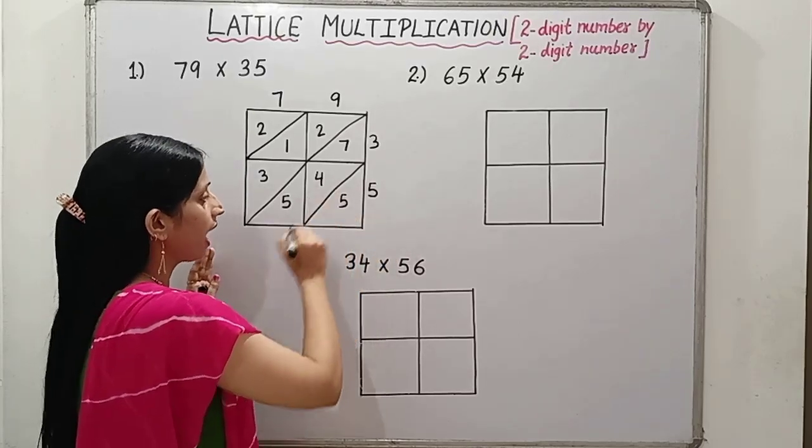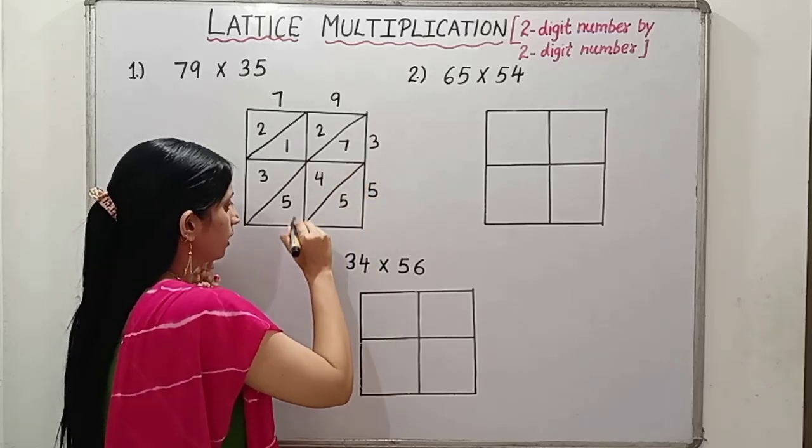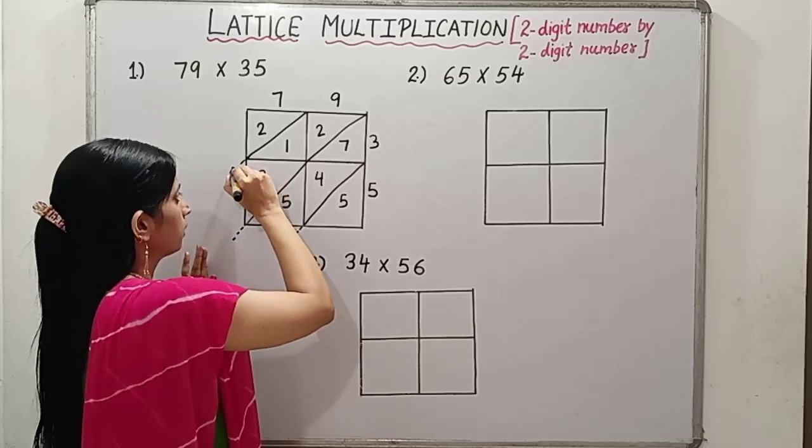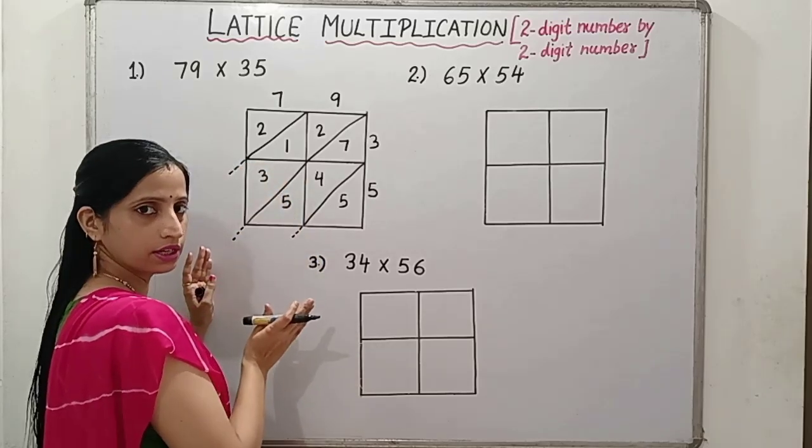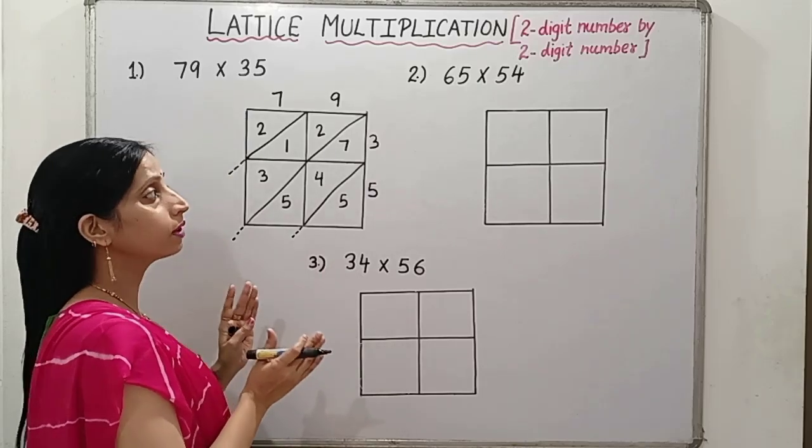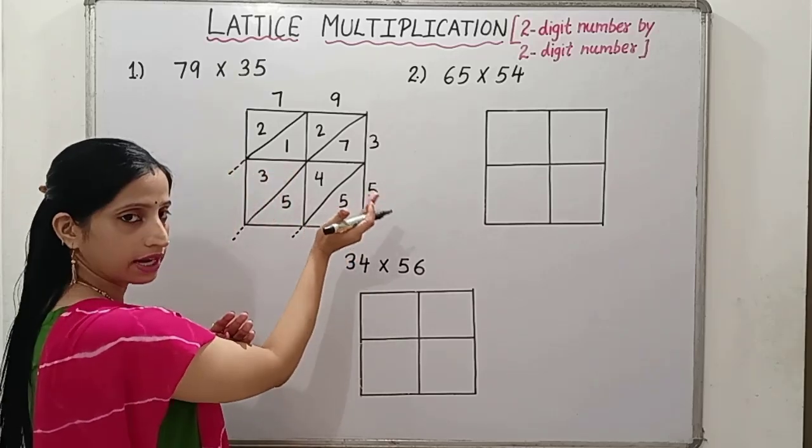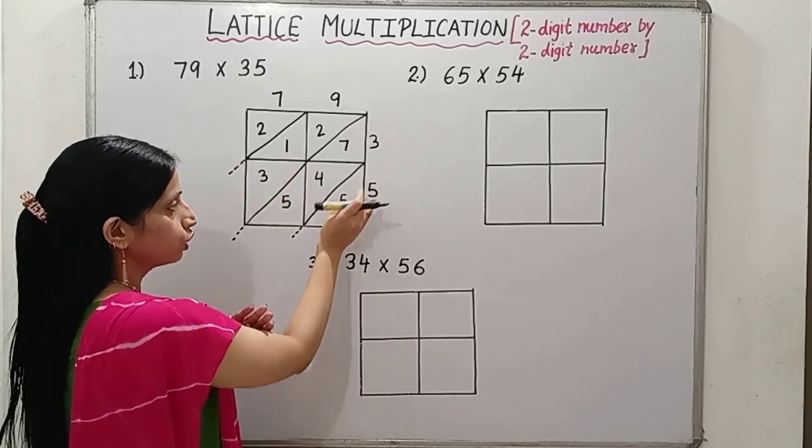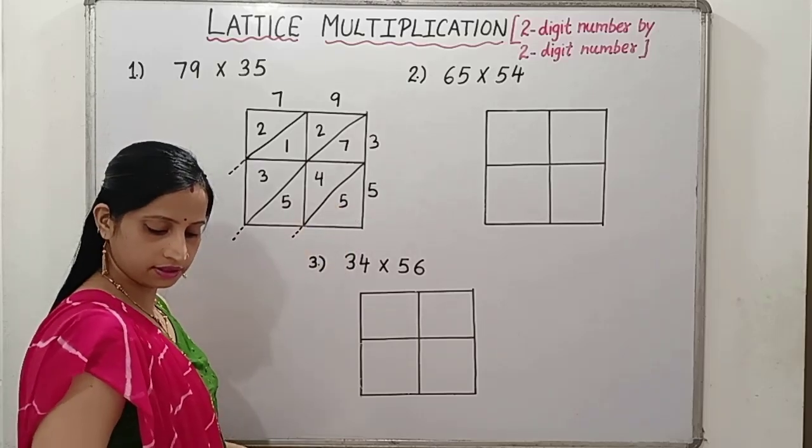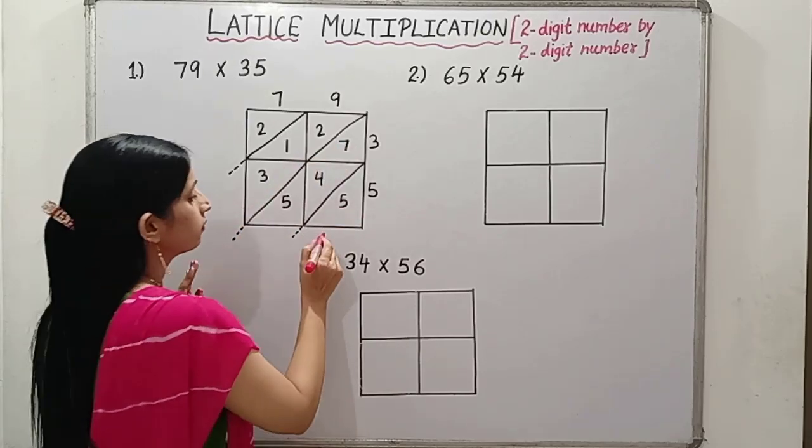Now the next thing, we will add the numbers diagonally. This was our first diagonal. This was our second diagonal and this was our third diagonal. As in any other addition problem or in multiplication problem, we always start adding from one's place. Similarly, we will start adding from this side, right hand side. So 5, write 5 here. In this diagonal, there is only one number, 5. Let's write 5.